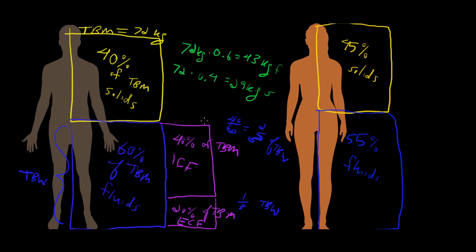If we're trying to find out how much intracellular fluid the person has, take 43 times two-thirds. So 43 times two-thirds equals about 28.6 kilograms of intracellular fluid. Similarly, 43 times one-third equals about 14.3 kilograms of extracellular fluid.